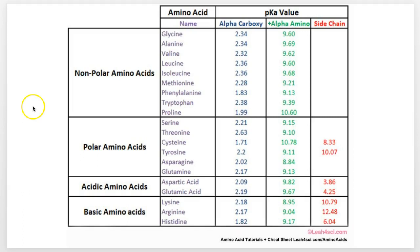Your acidic amino acids — aspartic acid and glutamic acid — have pretty low pKas and most of the time will give up those hydrogens. Then you've got the basic ones — most of the time they're going to accept hydrogens. That's kind of cool.